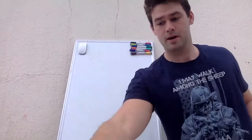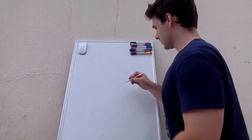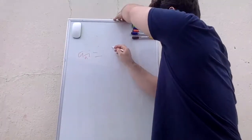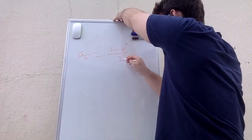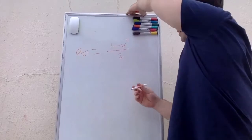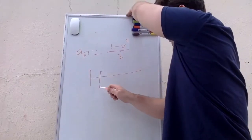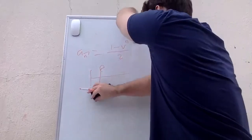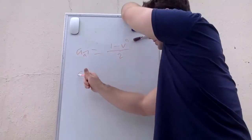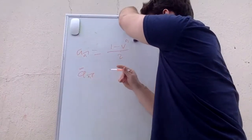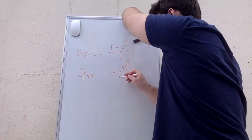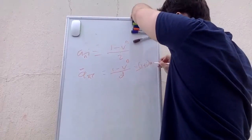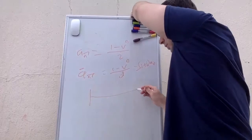Now let's go over some annuities. We know our basic a-angle-n, or annuity immediate, is equal to (1 − v^n) / i. This annuity immediate means the first payment is due at time one, not time zero. An annuity due — written with a double dot, a-double-dot-angle-n — is equal to (1 − v^n) / d.